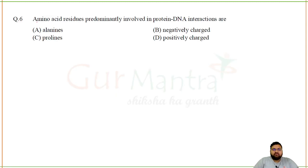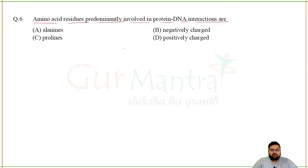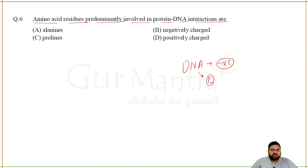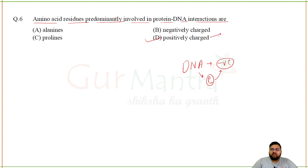Amino acid residues predominantly involved in protein–DNA interactions: DNA has a negative charge on its surface due to phosphate groups. Therefore, the amino acids that interact with DNA should be positively charged. Those are lysine and arginine — these positively charged amino acids interact with the negatively charged DNA.